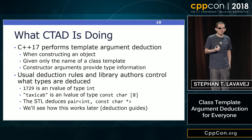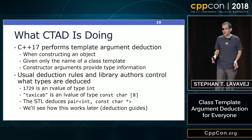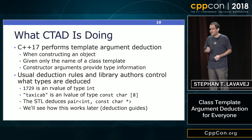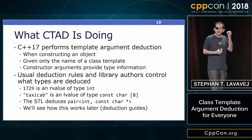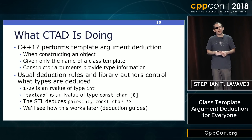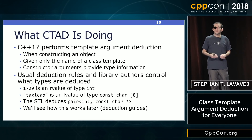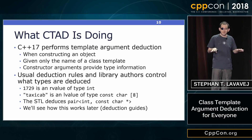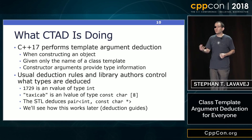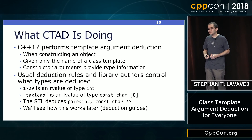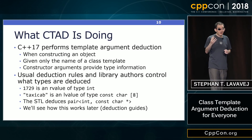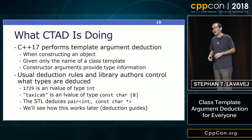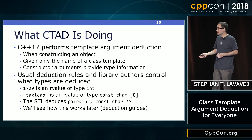So what is CTAD doing? CTAD happens when you construct an object — you need to be making an actual object that's going to live in memory. Given only the name of the class template, for example std::pair, and constructor arguments — 1729 and "taxicab" — we're going to use the usual template argument deduction rules for function templates and overload resolution to figure out what actual concrete type we want to construct. In this case, because 1729 is an rvalue of type int, and "taxicab" is a string literal of type const char[8], CTAD produces the type pair<int, const char*>. A little extra help is needed from the STL called deduction guides — we'll see how that works.